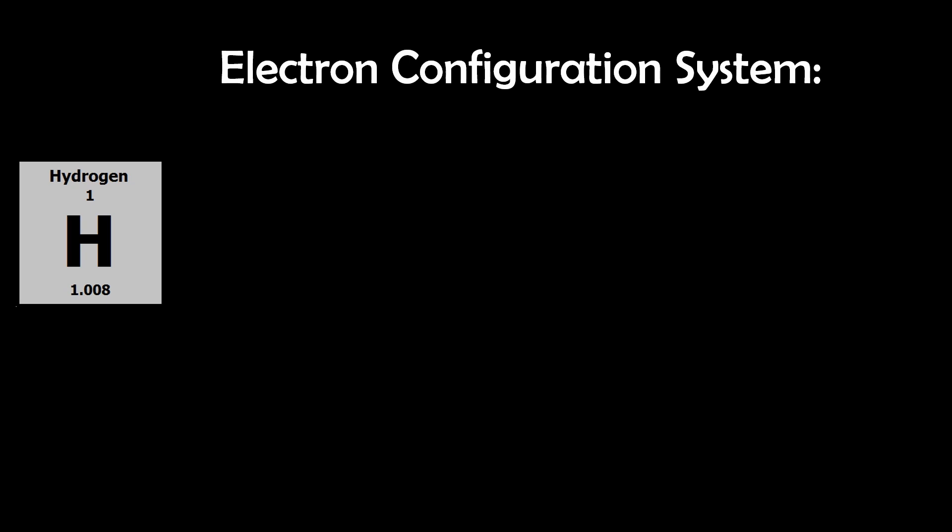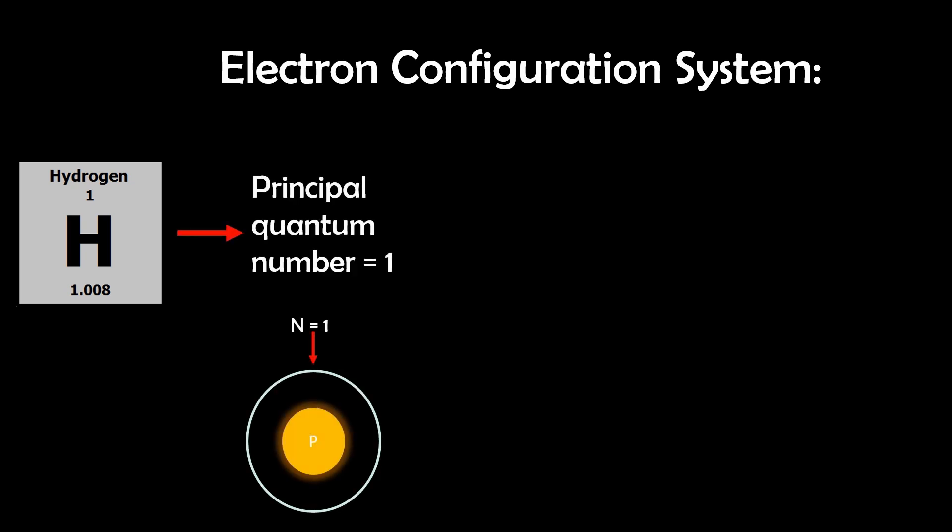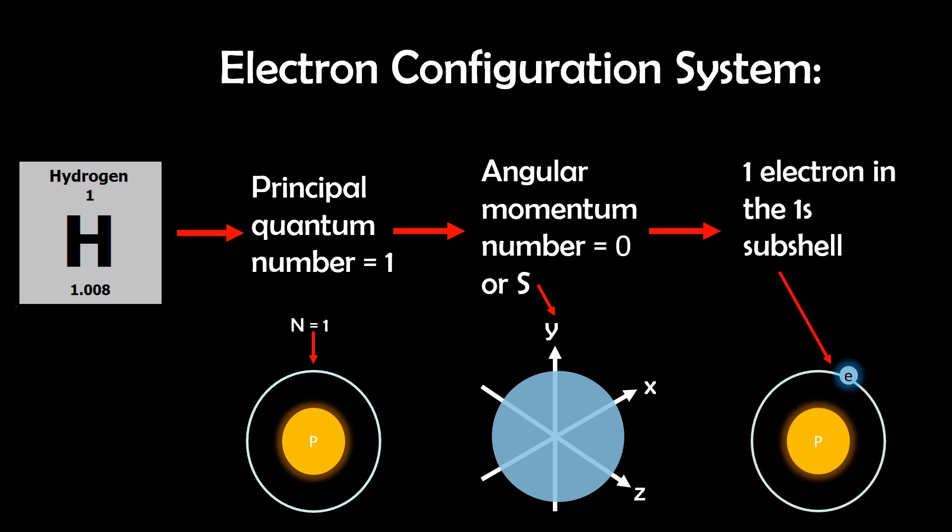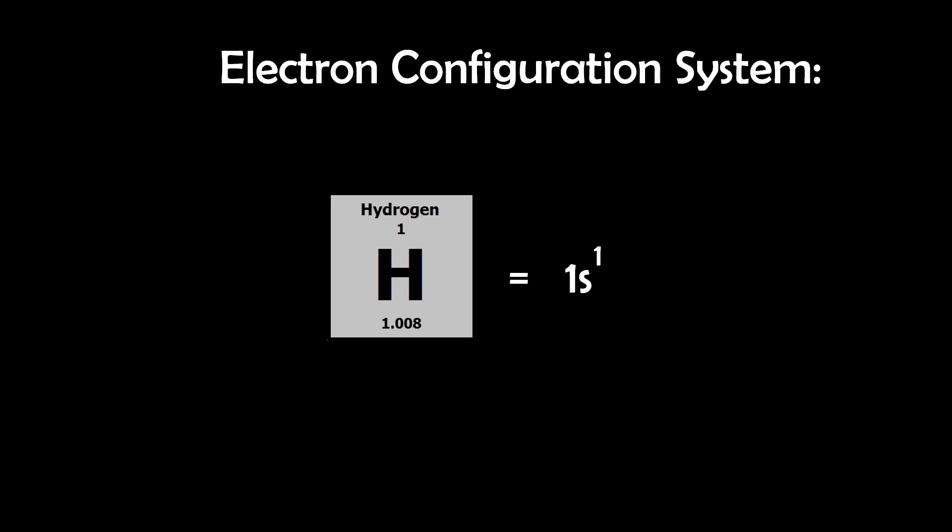So for example, take hydrogen. We start with the principal quantum number, which in this case is one. Next, we determine that it has an L value of zero, so it falls into the S subshell. And lastly, there is one electron in its one S subshell, leading us to the configuration of 1s1, and the number of electrons is a superscript.